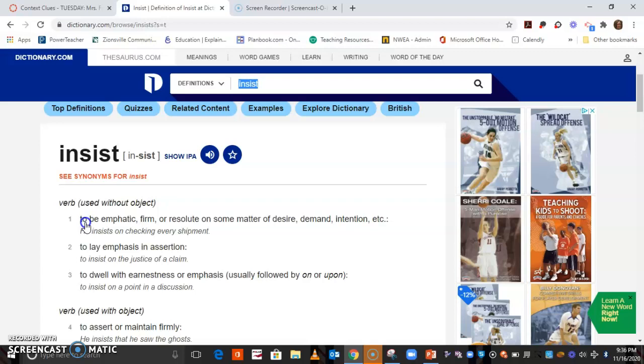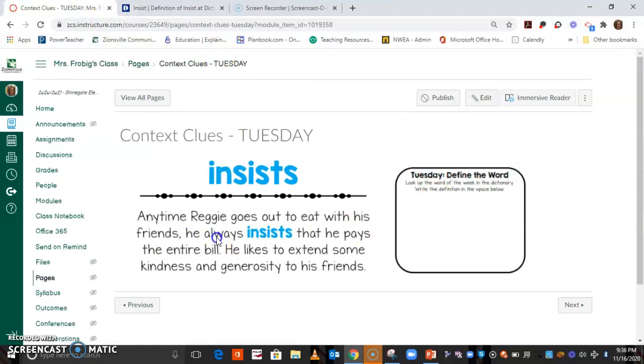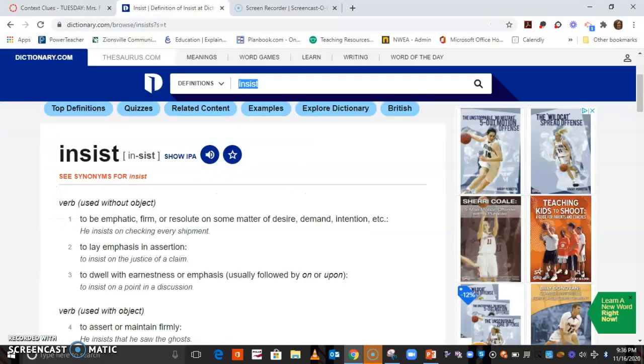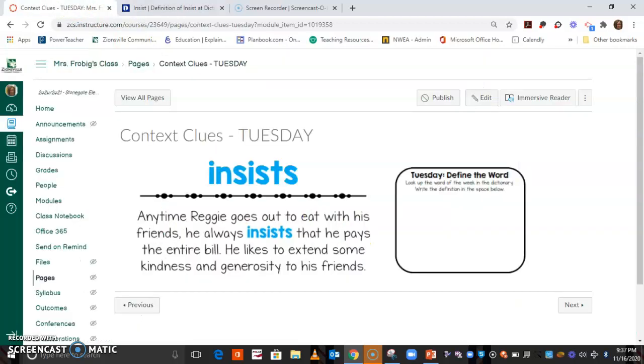Okay, so yesterday we said to demand - like he would always demand that he pays the entire bill. If we say to be firm, emphatic, or resolute on some matter of desire, demand is this word right here, and that's what we predicted yesterday. So for our definition, we can write 'to be firm.' Emphatic is a really grown-up word. If you're not really sure what that means, don't use it. Use the words we do know: firm and demanding. Okay, all right, context clues.